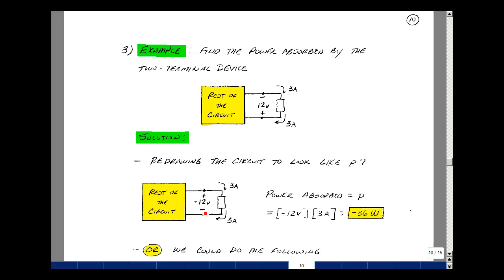Now this looks like the drawing of our definition of power absorbed. Current is going in the plus terminal and coming out of the minus terminal. So the product of these two then would be the power absorbed. So minus 12 times 3 would give me a minus 36 watts. So this element is actually generating 36 watts of power or absorbing minus 36 watts.